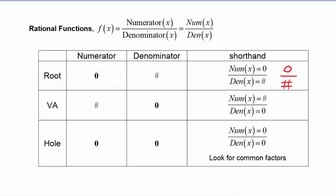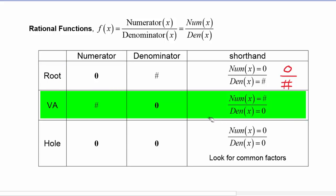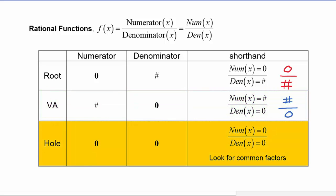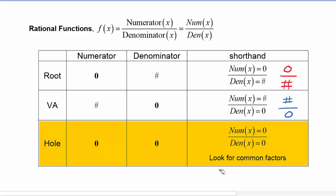A vertical asymptote will occur when the denominator of the rational function is zero but the numerator is not zero — the numerator equals some number and the denominator equals zero. A hole will occur in the rational function when both the numerator and the denominator are zero at the same time, which happens when the numerator and denominator have common factors — you can think of this as zero over zero.